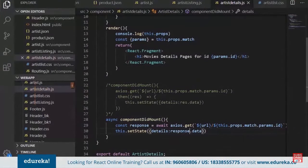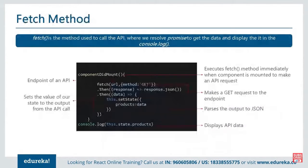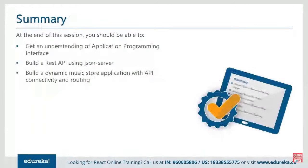Promises are used to handle async operations in JavaScript and provide better error handling. The Promise constructor takes a callback function with two arguments — resolve and reject. If the operation inside the callback performs as desired, resolve is called; otherwise reject is called. We've used the fetch method to make our artist page. At the end we are able to call the REST API, and that's how a complete React application can be developed. You can think of a shopping cart example — a listing page, a detail page on click, and a form to place and submit an order. This is how end-to-end development of a React application can be done.